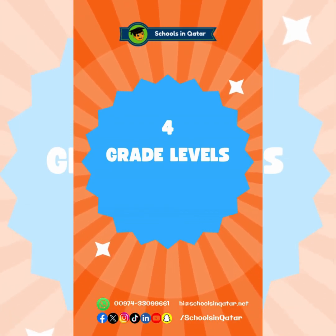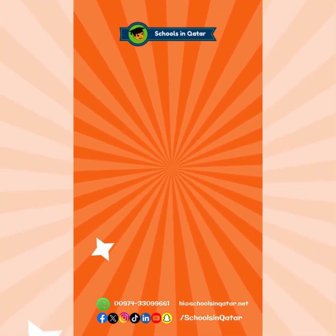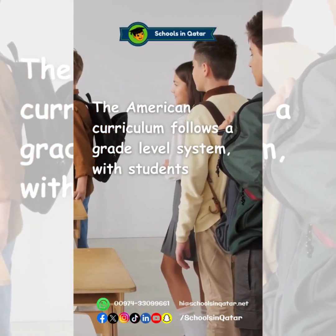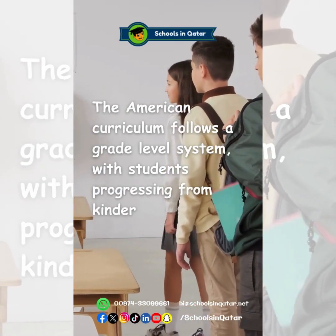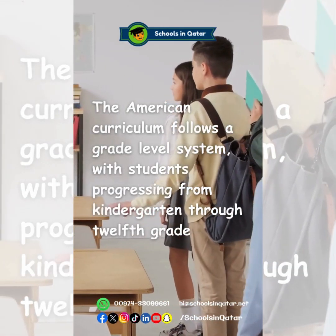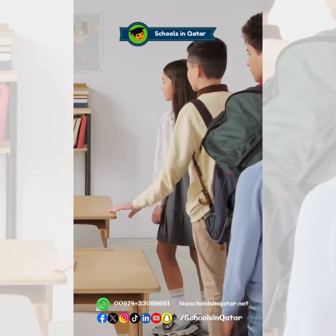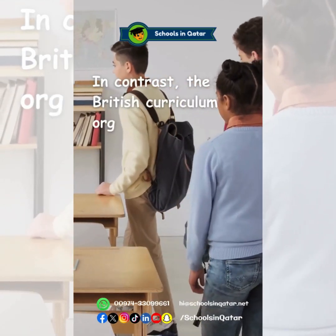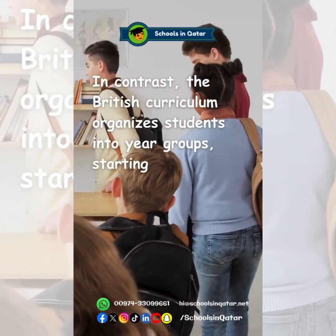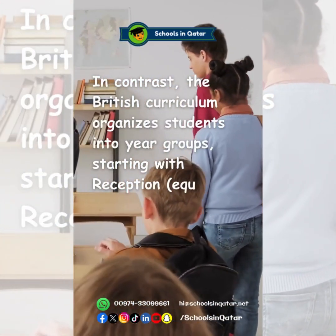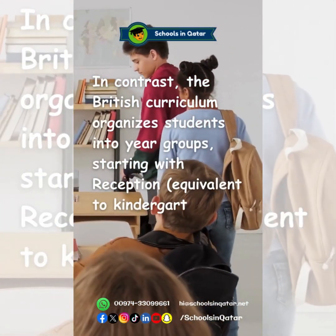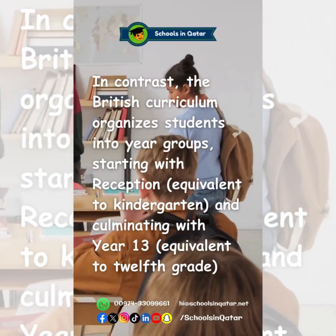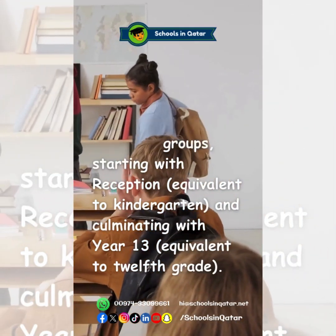4. Grade Levels. The American curriculum follows a grade-level system, with students progressing from kindergarten through 12th grade. In contrast, the British curriculum organizes students into year groups, starting with Reception, equivalent to kindergarten, and culminating with Year 13, equivalent to 12th grade.